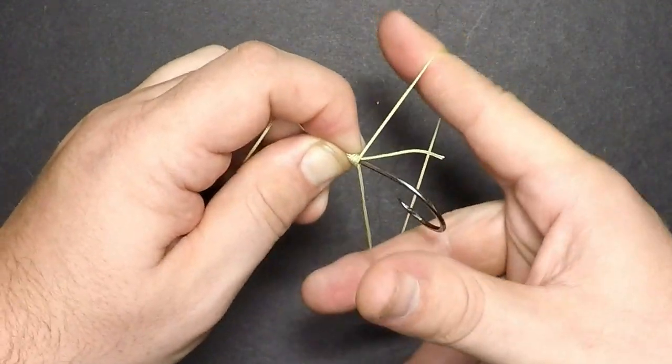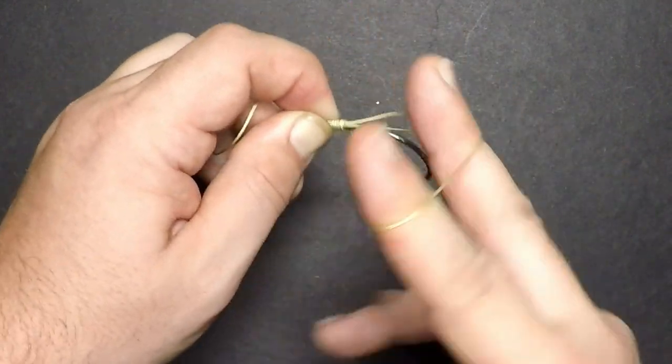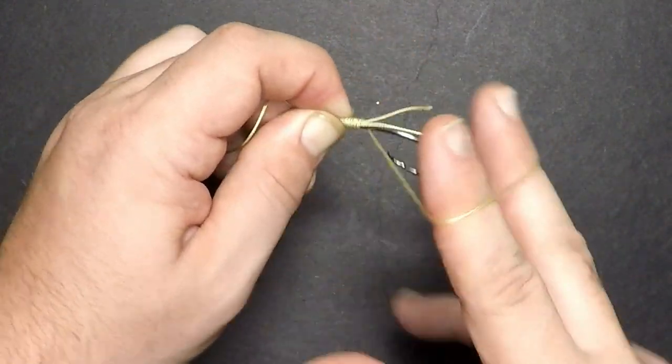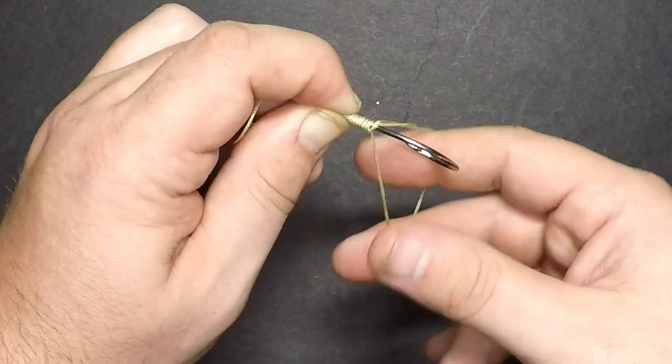This knot works with all forms of line. I'm using really thick braid, so I'm only going to make 8-10 wraps, but if you're using weaker lines, such as 12 pounds or less, you'll want to make more wraps.